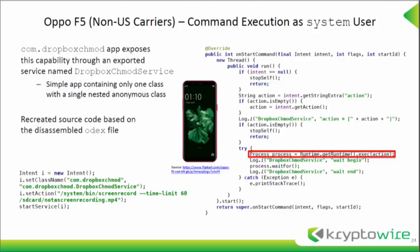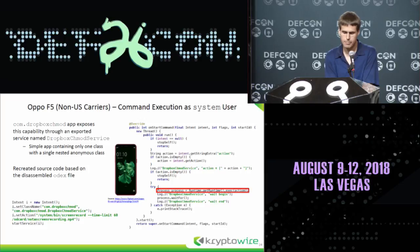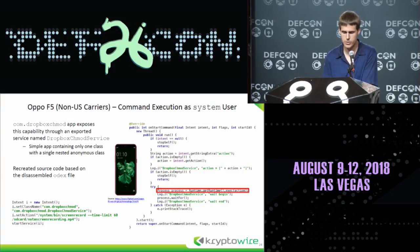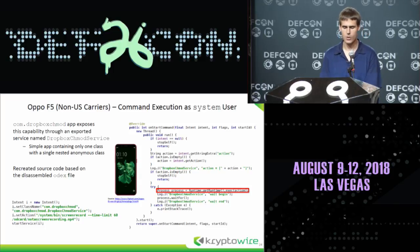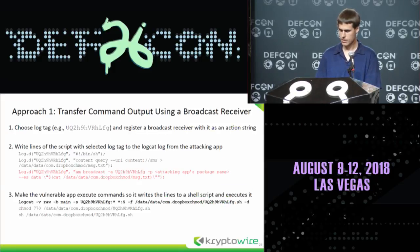This is a non-US carrier device popular in Asia called the Oppo F5. This vulnerability has been patched and they also became a CNA afterward, which we thought was a very good thing. There's an application here — we took the ODEX file and provided the source code for it. Essentially it just has a thread that will take a string and execute it as the system user. The lower right shows the actual code to execute it.